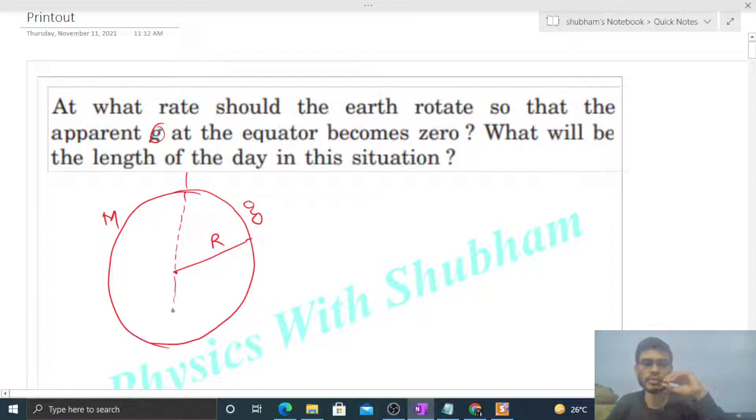Because of this, what happens is that at the equator the value of g decreases. That is g minus omega squared times capital R, and this is what is known as the apparent value of g. Now you can see, as omega increases, this apparent value of g will decrease.